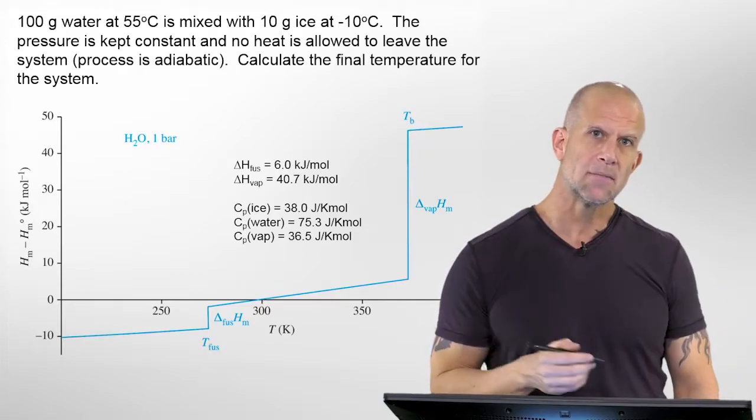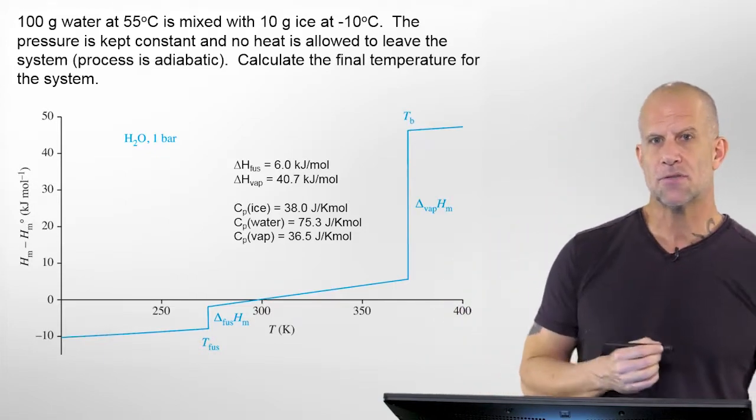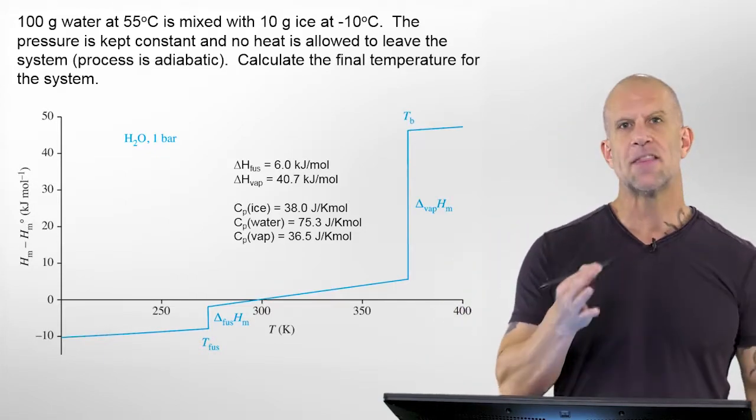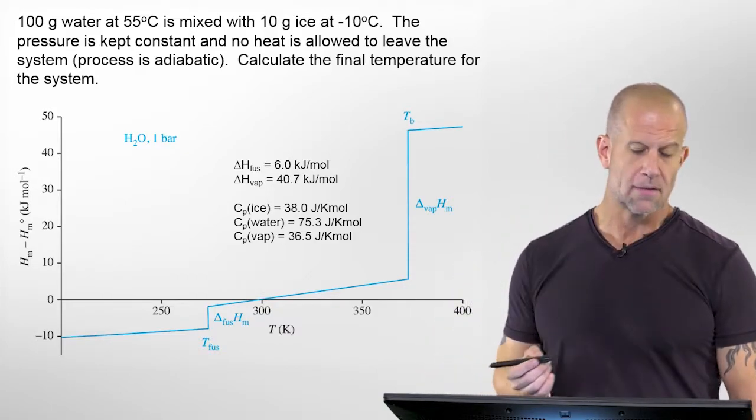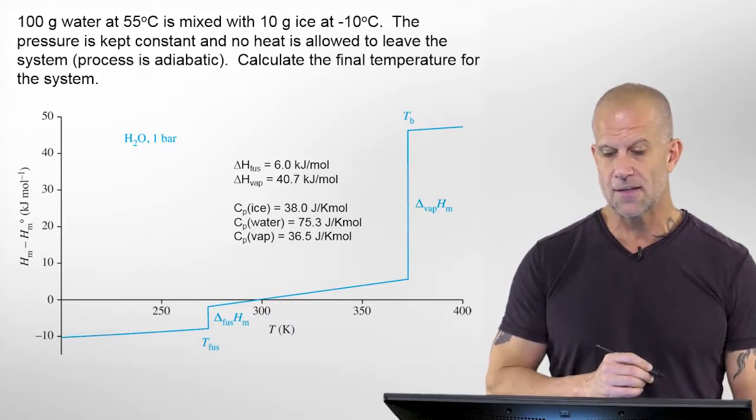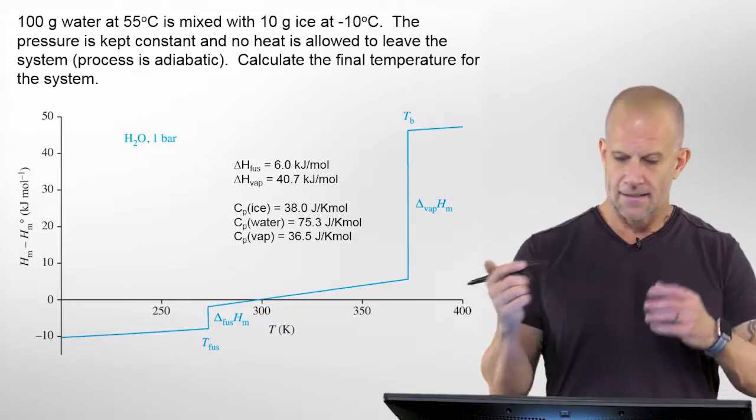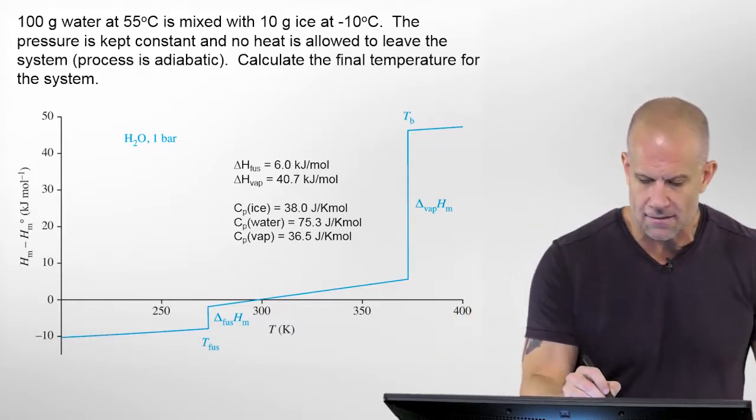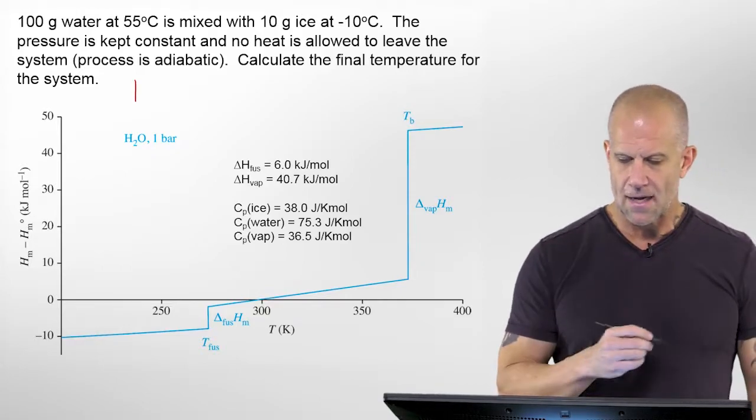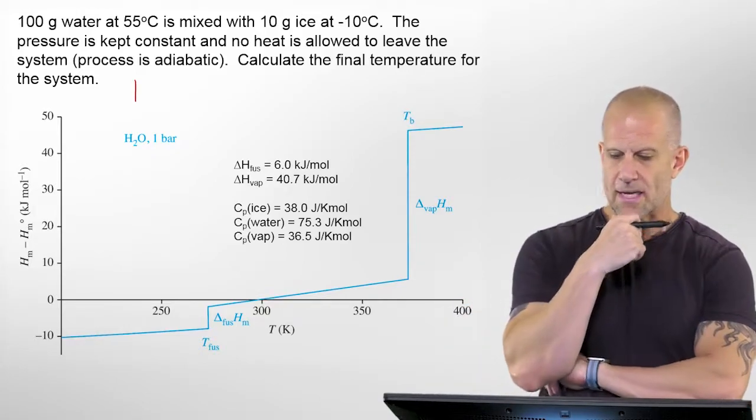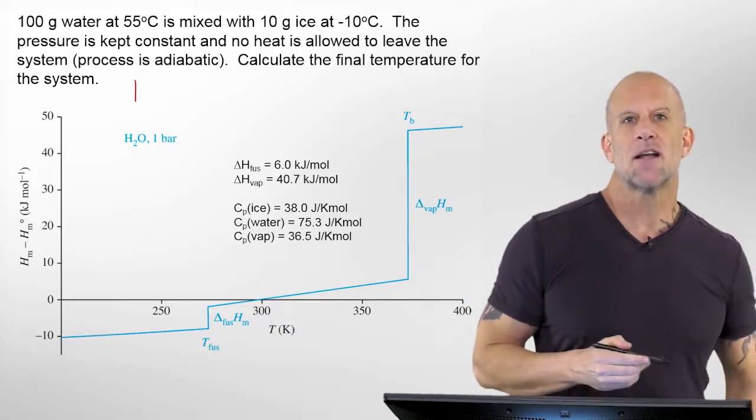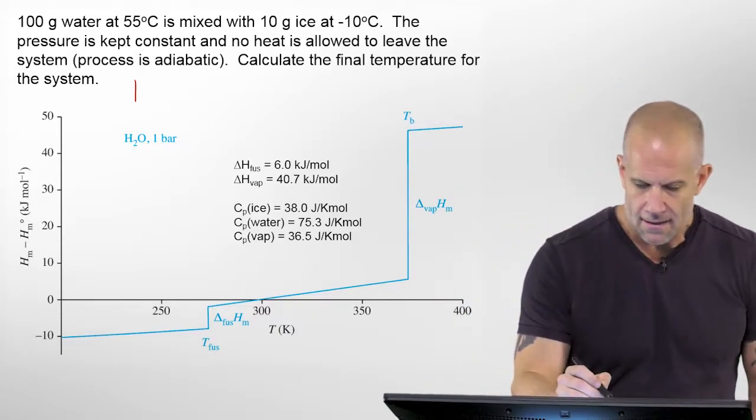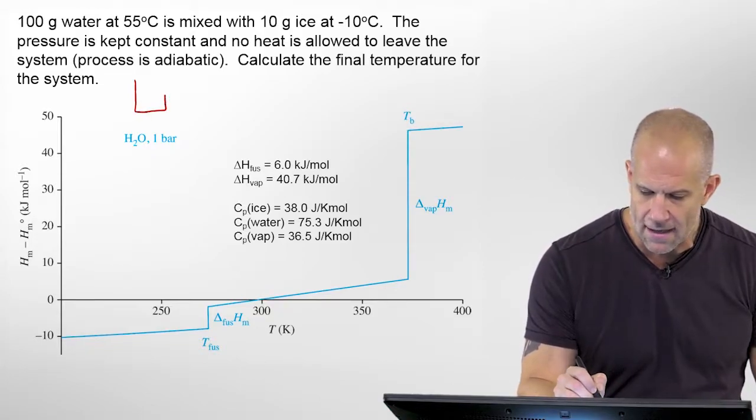So what is problem 20 in chapter two of Tinoco? In the fifth edition it says that you have 100 grams of water at 55 degrees Celsius and you mix it—I always like to set up these problems by drawing it—you mix it with 10 grams of ice at minus 10.